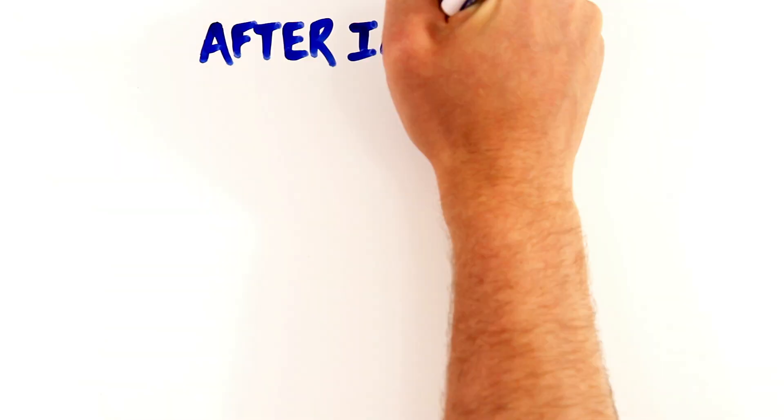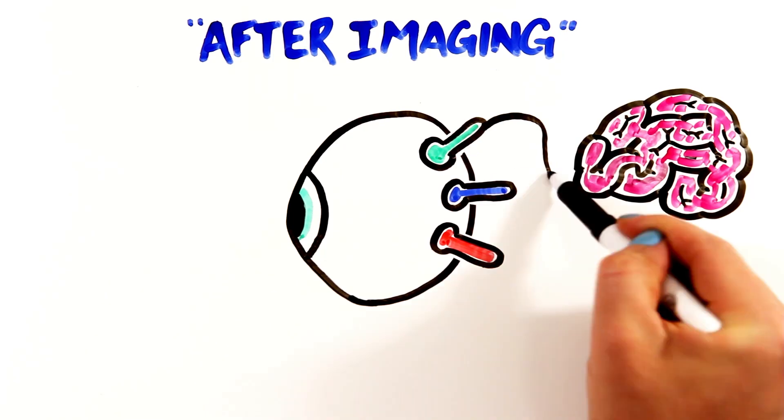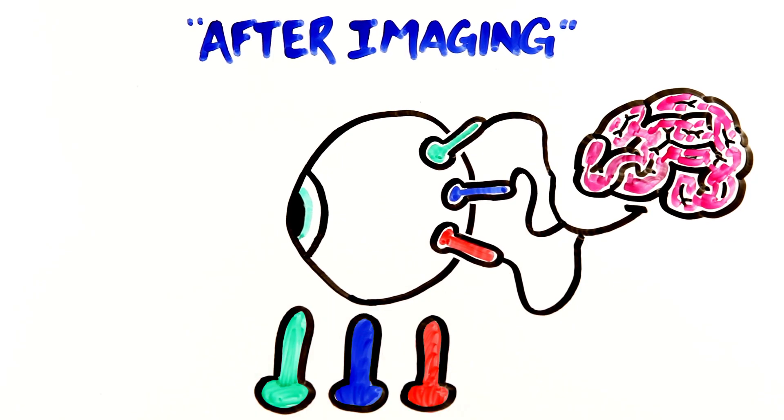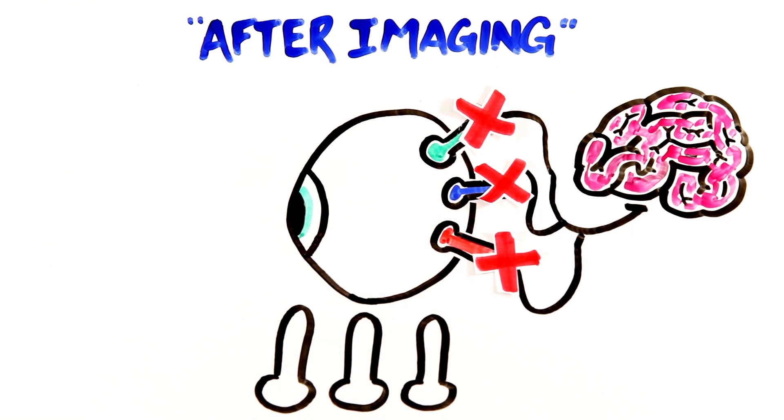This phenomenon is known as after-imaging. After staring long enough at the brightly colored image, your cones slowly become fatigued and the supply of photopigment in the respective cones becomes exhausted, which ultimately stops sending signals to the brain.